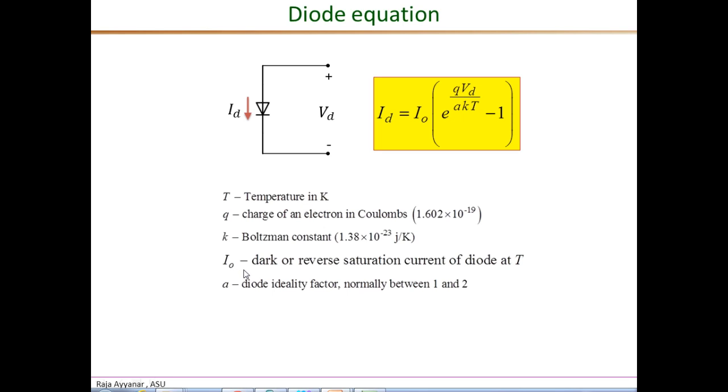IO is the reverse saturation current, which is an important characteristic of any diode, and it has a very strong dependence on temperature. IO is the current at a given temperature at which we want this PV cell model. And a is called the diode ideality factor.